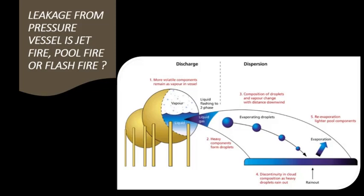Now, just to conclude, let me give you an example of all three types of fires we have discussed. Let's consider a pressurized storage vessel as shown here with a puncture on its surface wall. This can cause a pressurized leakage of fuel, and during this leakage, if it gets an ignition source, then that can result in a jet fire.